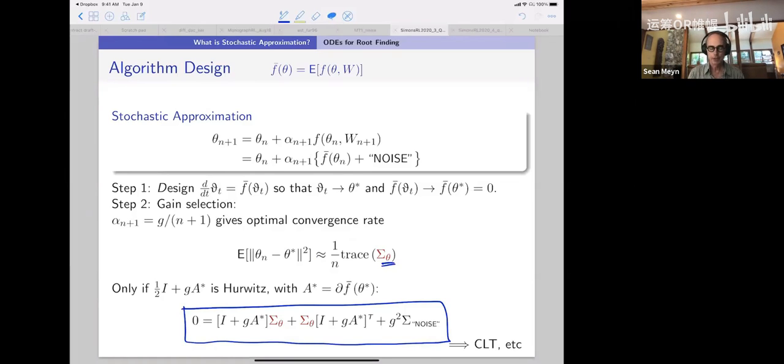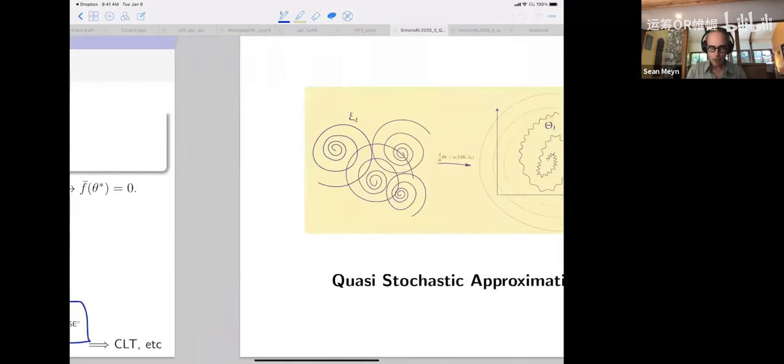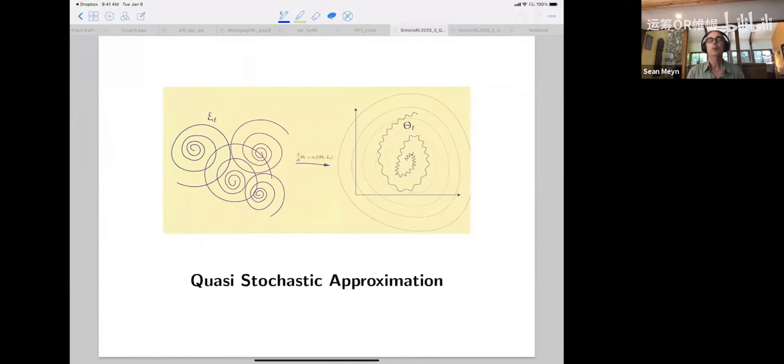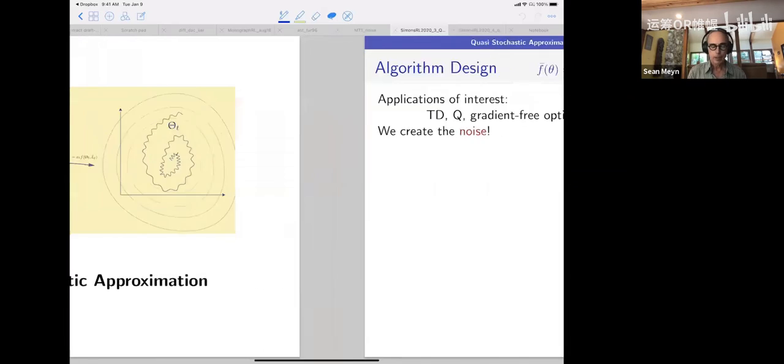Alright. So that's all I want to say about stochastic approximation. It's an absolutely beautiful theory. Convergence theory is sort of trivial. Proving this and the central limit theorem is a bit less trivial, but not so bad. Alright. So now the quasi thing, you can imagine what I'm going to do, I'm going to get rid of the noise and make it deterministic. And let's do that. So again, in a lot of the applications of interest, like in reinforcement learning, we create the noise and there may be exogenous noise.